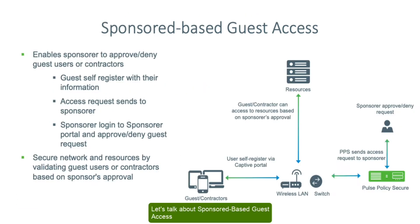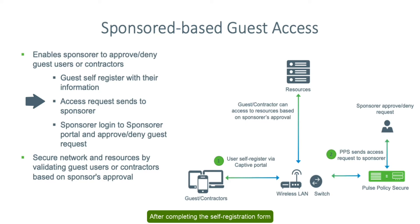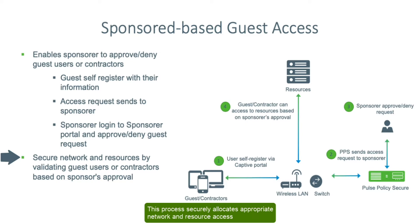Let's talk about sponsor-based guest access. This enables sponsors to approve or deny guest users or contractors. Guest users self-register using their personal information. After completing the self-registration form, the user's access request is sent to their sponsor. The sponsor receives an email or SMS with a link to the sponsor portal. When they log in, they may approve or deny the guest access request. This process securely allocates appropriate network and resource access by validating guest users or contractors based on their sponsor's approval.